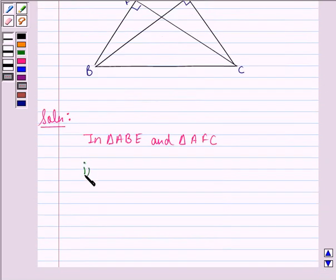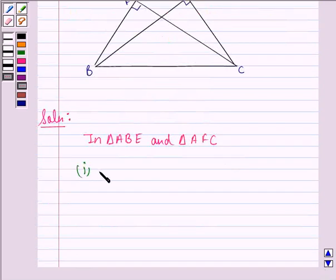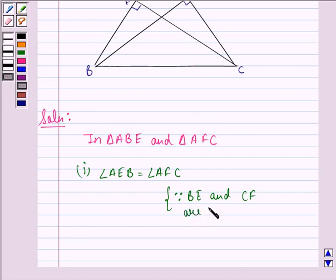first we see here that angle AEB is equal to angle AFC because CF and BE are perpendicular drawn on AC and AB. So angle AEB is equal to angle AFC because BE and CF are altitudes.